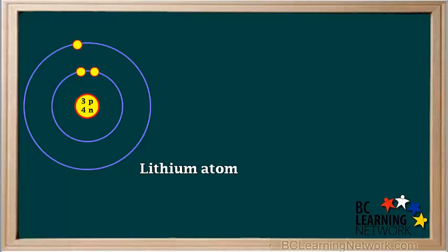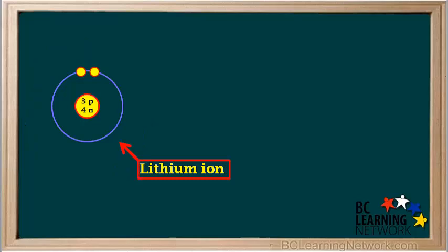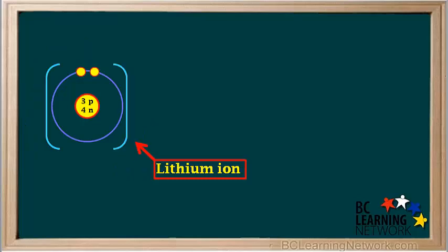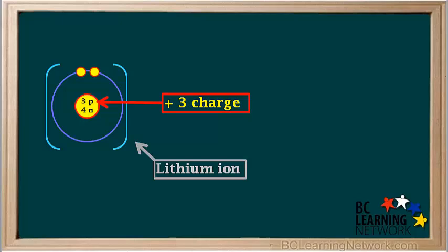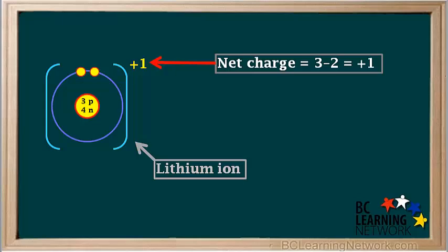Here's the Bohr model for an atom of lithium. We can see that a lithium atom has one valence electron, so lithium easily loses its valence electron to form a lithium ion. The Bohr models of ions are usually written with square brackets around them. The three protons in a lithium ion supply a positive three charge, and the two remaining electrons supply a negative two charge, so the net charge on a lithium ion is positive three minus two, which equals positive one. The net charge of positive one is written on the top right of the bracket.